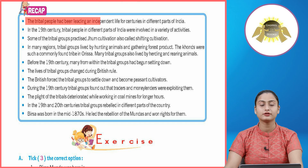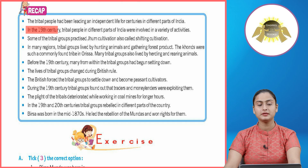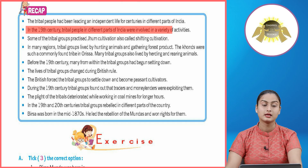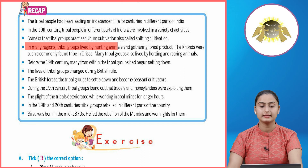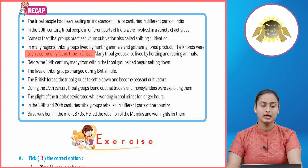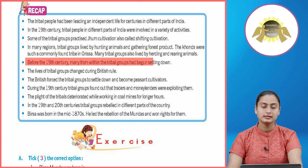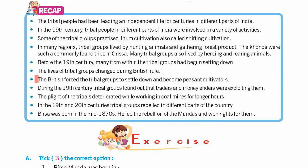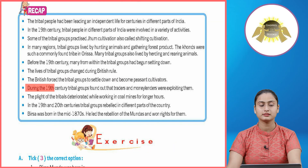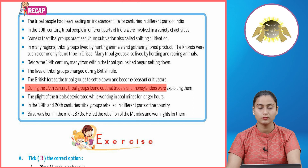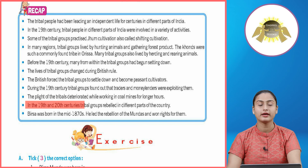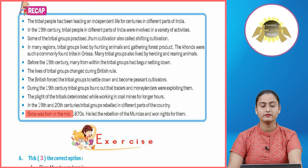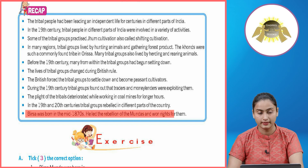Recap: tribal people had been leading an independent life for centuries in different parts of India. In the 19th century, tribal people were involved in a variety of activities. Some practiced jhoom cultivation (shifting cultivation); in many regions tribes lived by hunting animals and gathering forest produce, such as the Khonds in Odisha. Many tribal groups also lived by herding and rearing animals. Before the 19th century, many tribal groups had begun settling down. During British rule, tribals were forced to become settled peasant cultivators, and traders and moneylenders exploited them. In the 19th and 20th centuries, tribal groups rebelled in different parts of the country. Birsa Munda, born in the mid-1870s, led the rebellion of the Mundas and won rights for them.